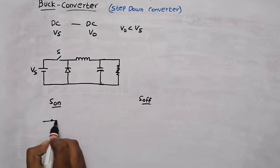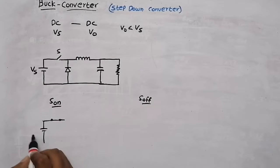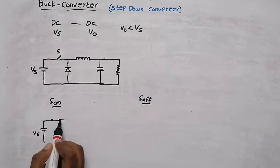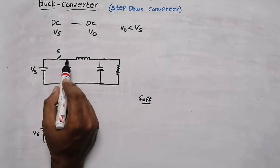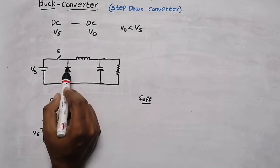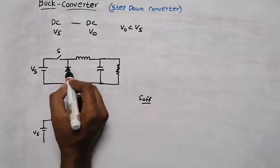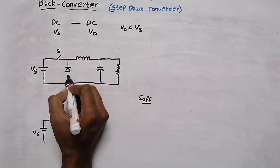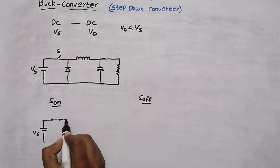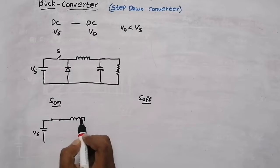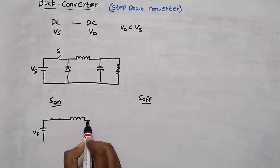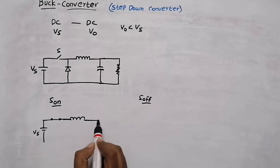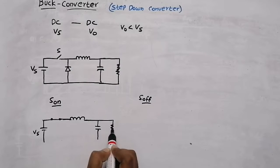In Mode 1, when the switch is on, the circuit is connected. Positive current flows from the source voltage, and when it encounters the negative end of the diode, the diode becomes reverse biased — it becomes an open circuit. The remaining current flows only through the inductor, and the inductor stores energy. Then the current flows to the capacitor and also to the load.